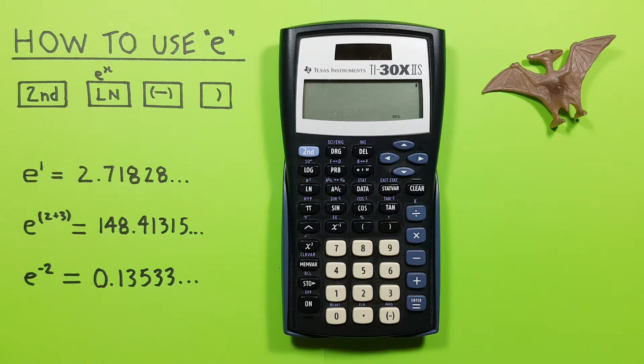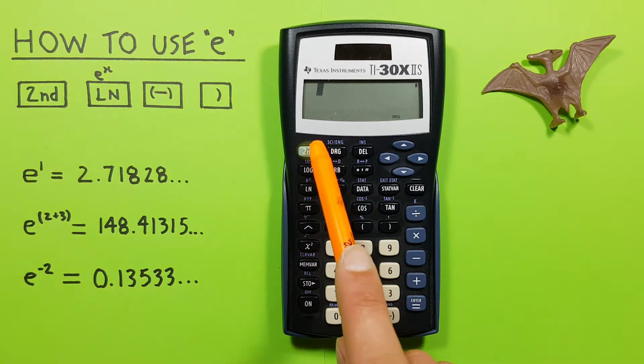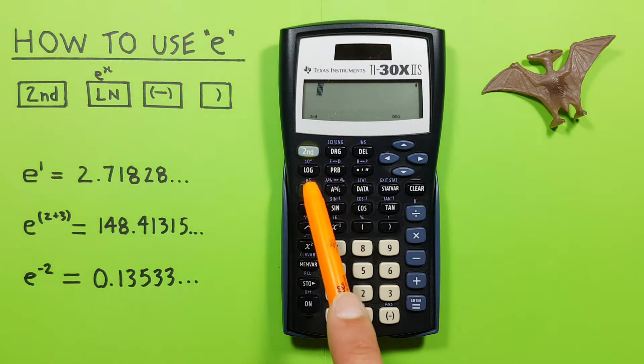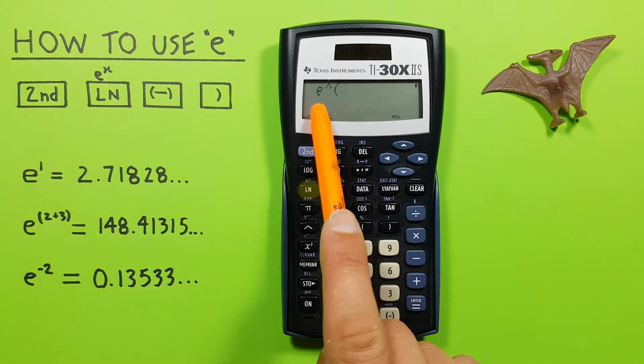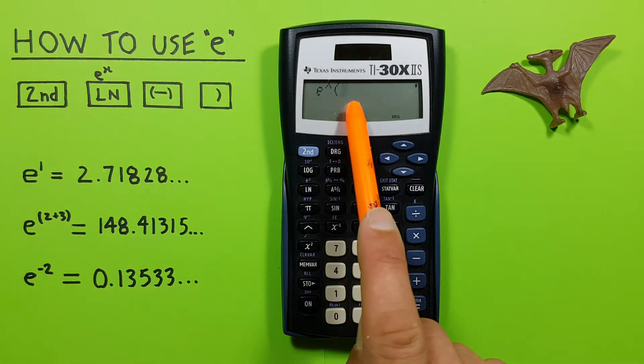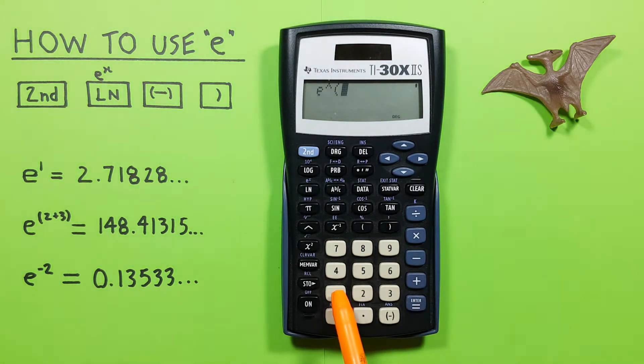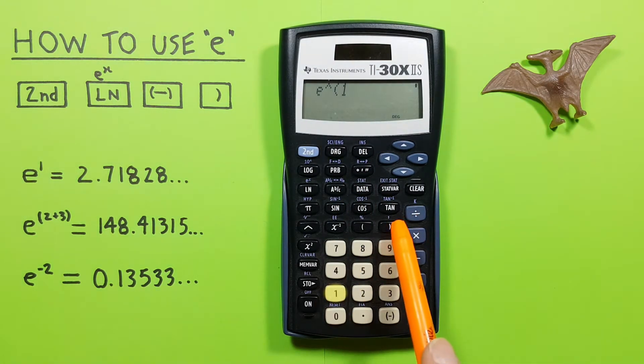If we just want to get E on our screen, we can do E to the power of 1. To do this we press 2nd, and then the ln key. We see an E with an exponent on our screen, and now we press 1, and close our bracket with the right bracket.